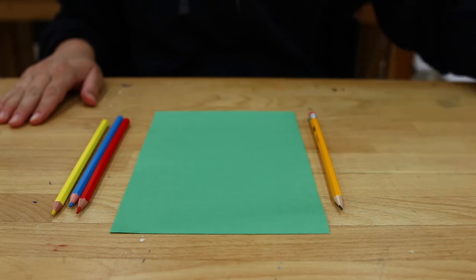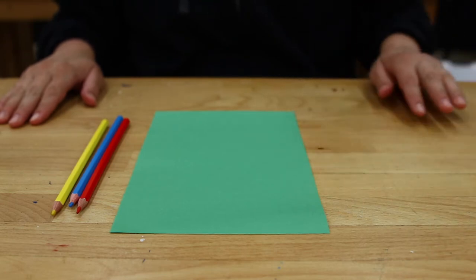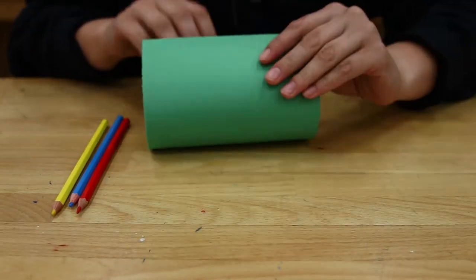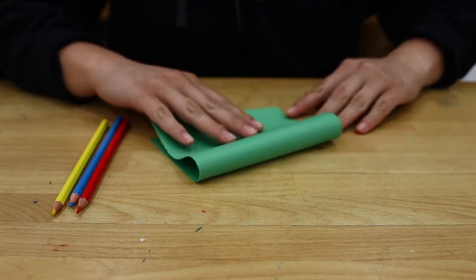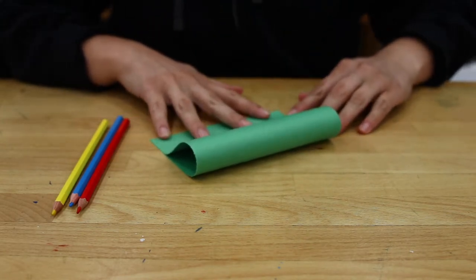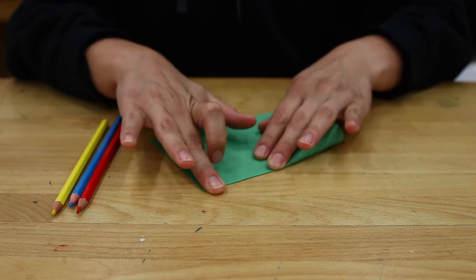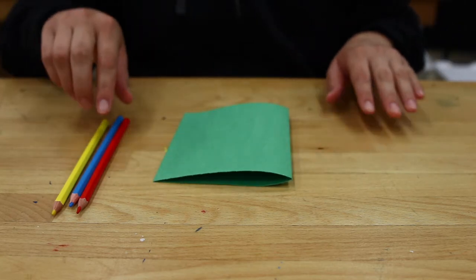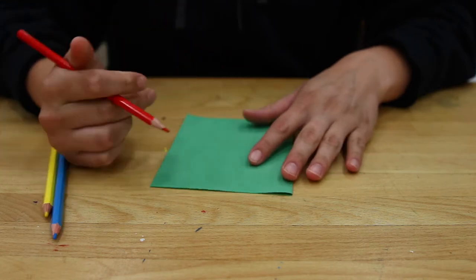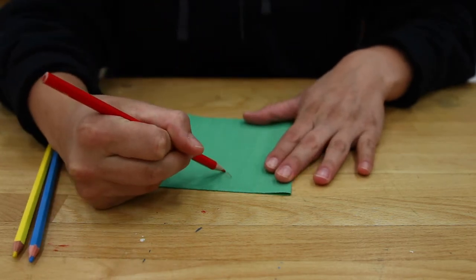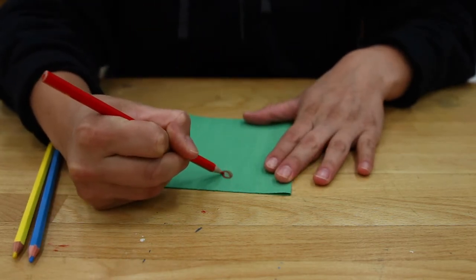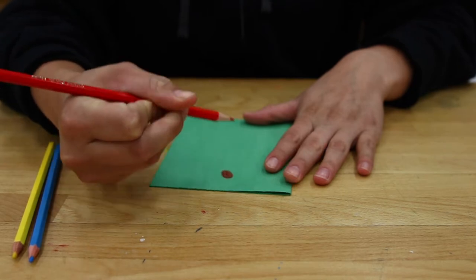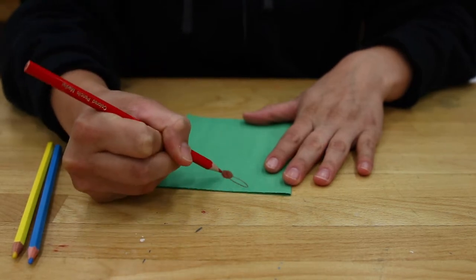To start, we'll need just the construction paper and the colored pencils. Start by folding your construction paper in half. Then, draw your own design on the outside of your card. Keep in mind that we'll be adding LEDs to the outside of our cards, so think about where you want the light to appear as you're drawing.